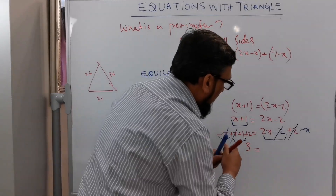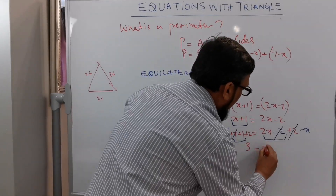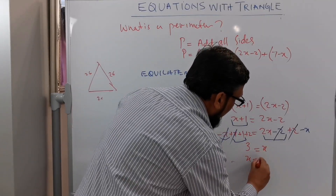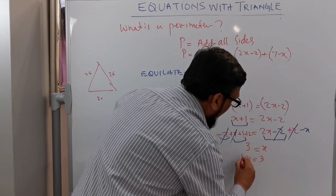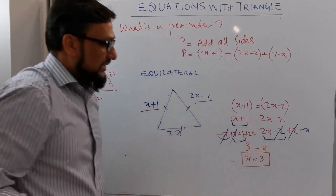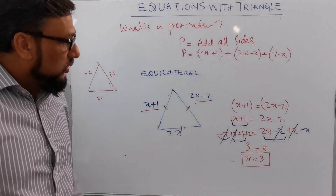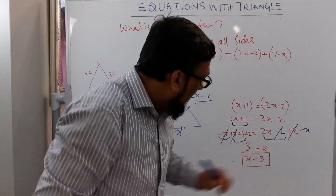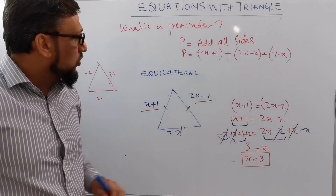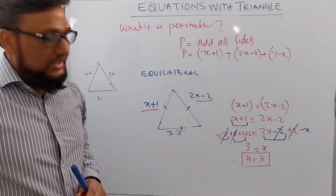This minus 2 cancels with this plus 2, and 2x minus x gives us x. So it means the value of x, which is our unknown, we found it — x is equal to 3.